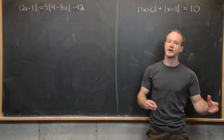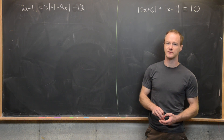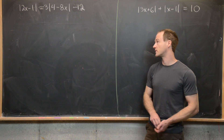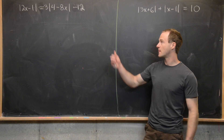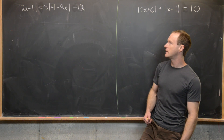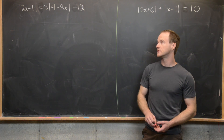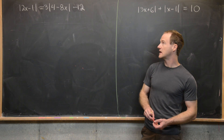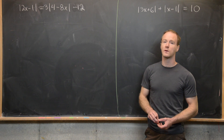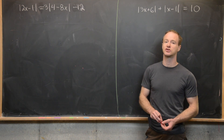Here we're going to look at two trickier types of questions involving absolute values. So let's jump into the first example. We have the absolute value of 2x minus 1 equals 3 times the absolute value of 4 minus 8x, minus 12.